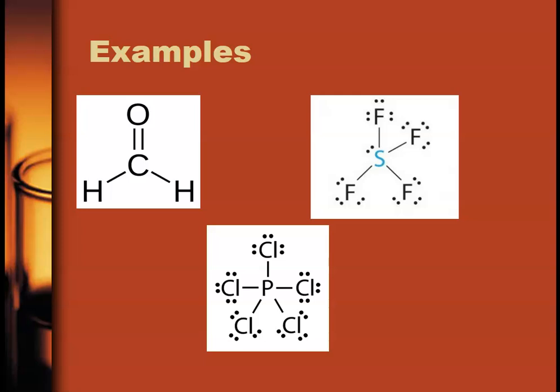And finally, at the bottom, we have PCl5, phosphorus pentachloride. It has polar bonds between phosphorus and chlorine, because of that difference in electronegativity. The shape, trigonal bipyramid, no lone pairs, five bonds. Therefore, the shape is symmetrical, the bond dipoles cancel, the molecule is non-polar. So the top two are polar, the bottom one is non-polar.